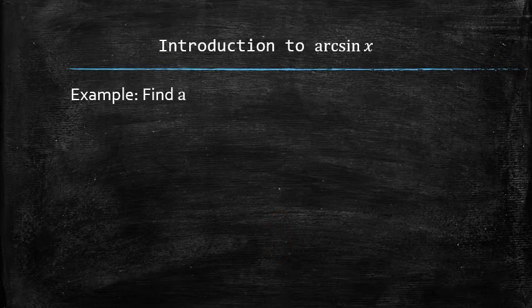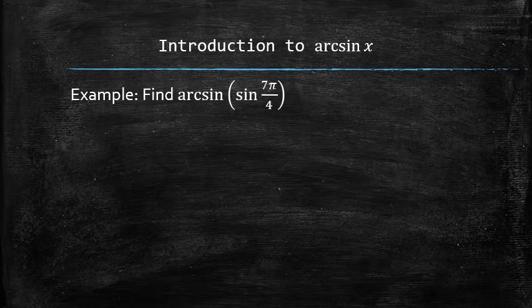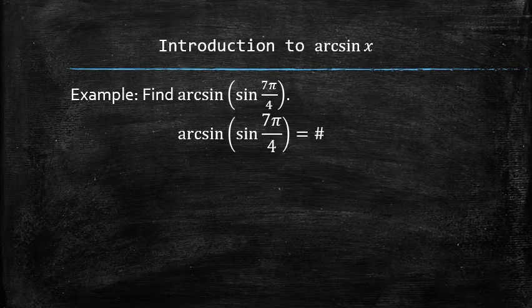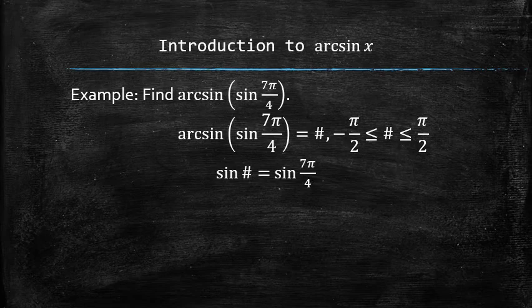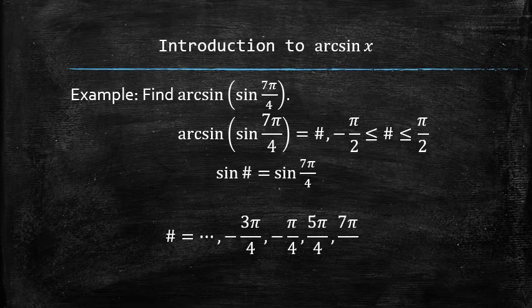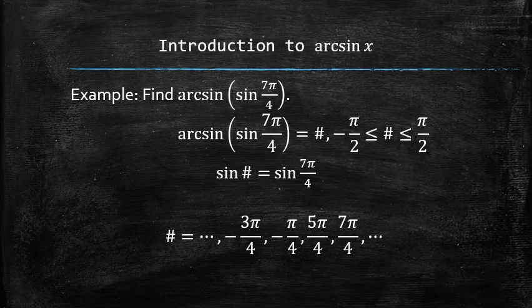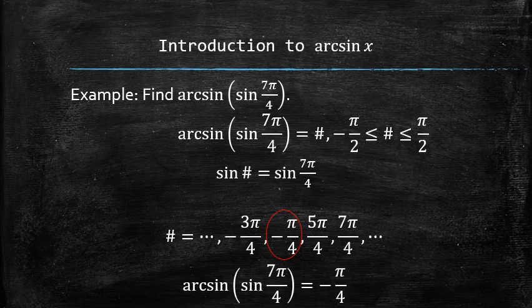Let's find arcsin of sin of 7π over 4. We are looking for some value that is between negative π over 2 and positive π over 2 such that sin of the value is the same as the sin of 7π over 4. There are infinitely many values for which sin is equal to sin of 7π over 4. However, only one of them is in the desired interval. Therefore, arcsin of sin of 7π over 4 is negative π over 4.